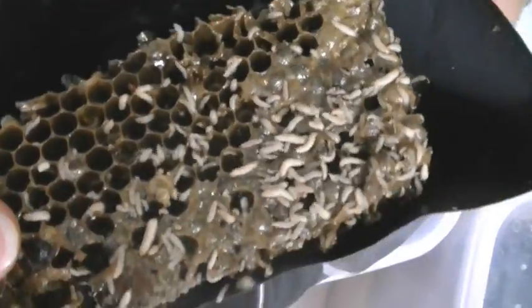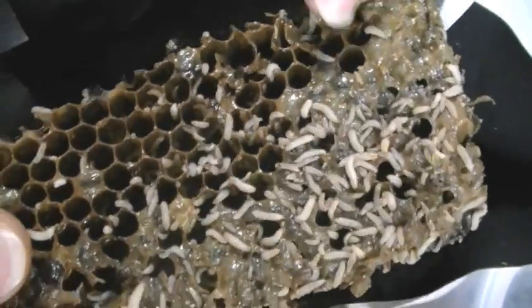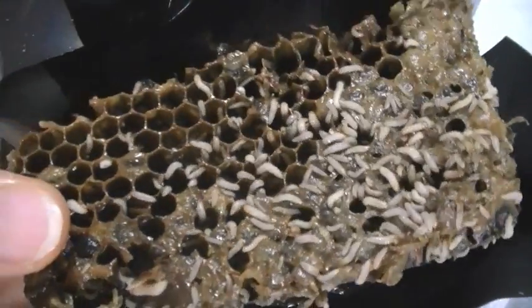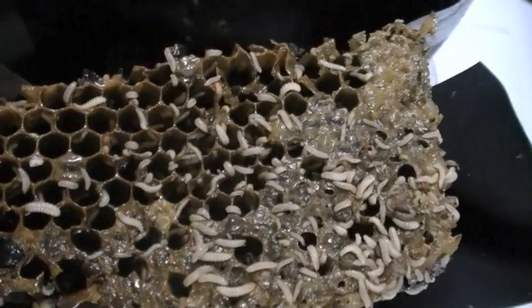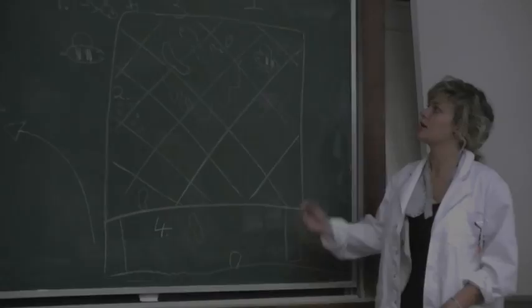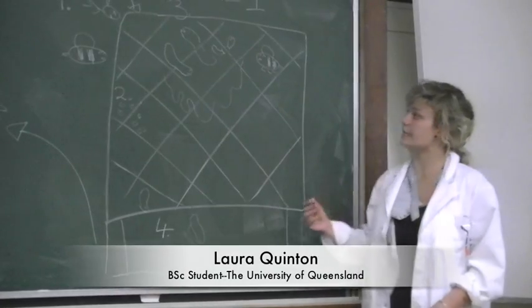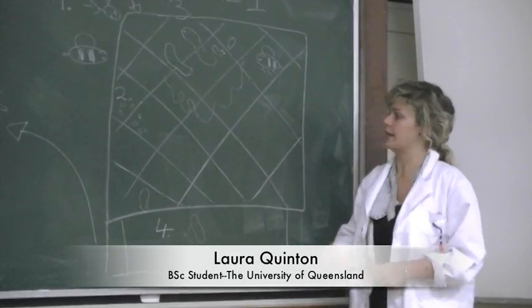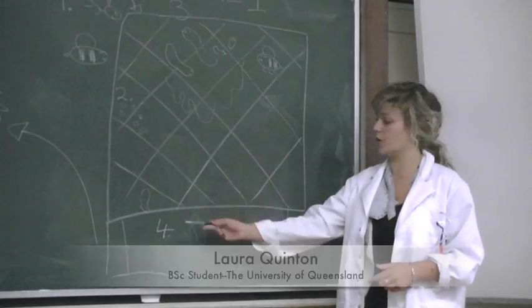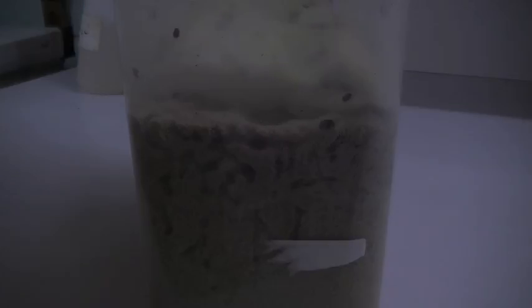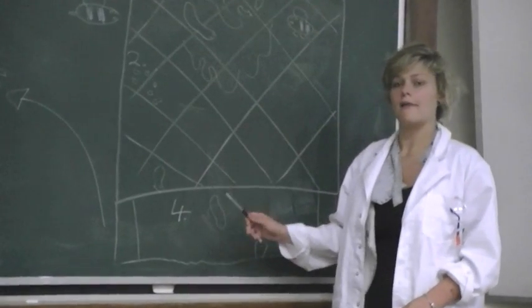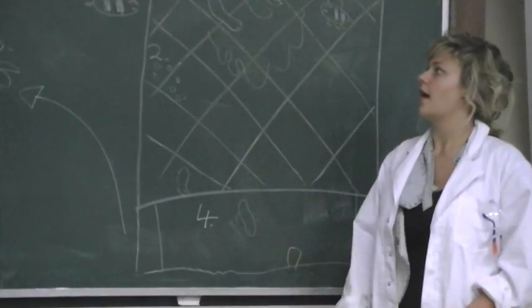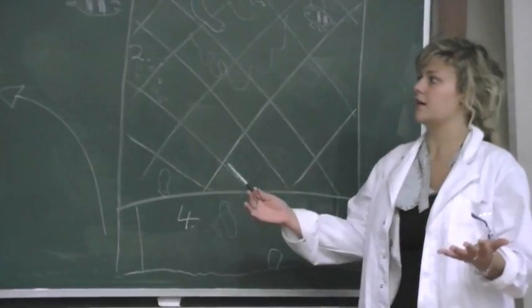Once the larvae have hatched, they eat and tunnel through the comb, fermenting the honey, creating a slime, effectively destroying the hive. After 10 to 16 days, the larvae tunnel through the hive, drop to the soil and pupate. After pupation, the beetle leaves the soil, starting the cycle again.